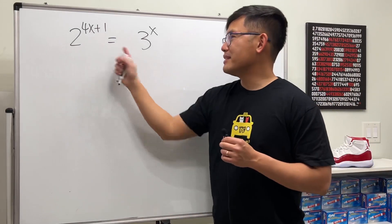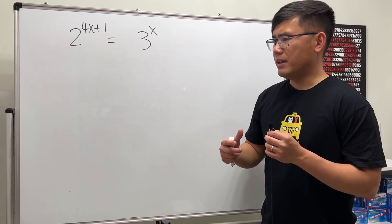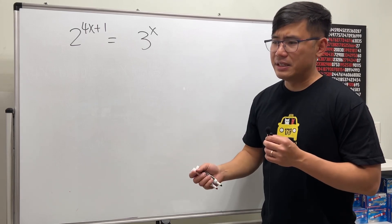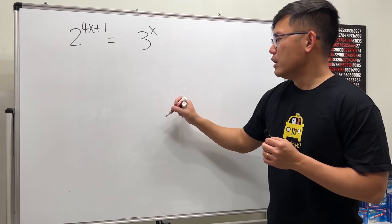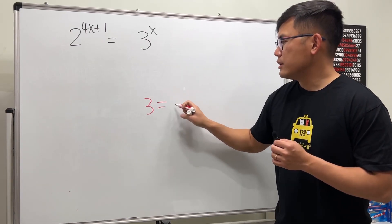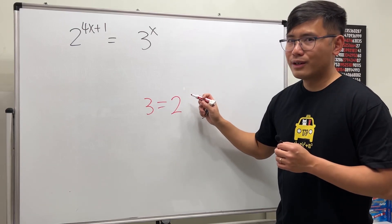If you take a look at the bases, 2 and 3, unfortunately we cannot make them the same easily. It's possible though, for example, you can write 3 as 2 to some power.